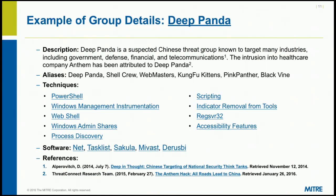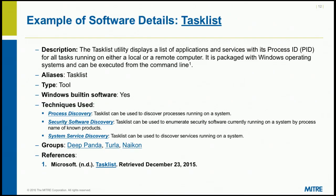Here's an example of what a group page would look like. We give a description, and then the aliases show all the associations. Because it is MediaWiki, we can pivot amongst the different techniques and they all link to one another. Here's an example of software — every single element within the ATT&CK framework has descriptions like this.